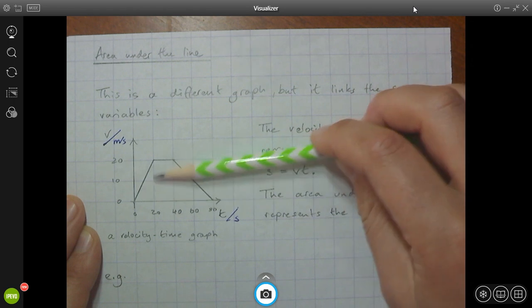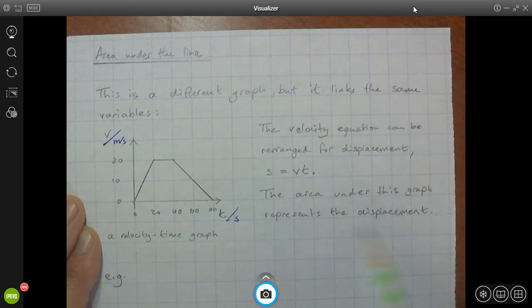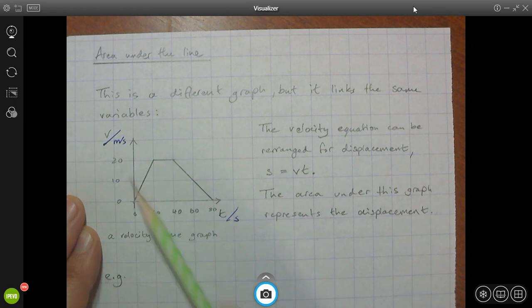And velocity times time equals displacement. So the area under this line is the displacement. It's the displacement of this object. If we look at the units and just consider those for a second, meters per second times by seconds, well, the seconds will cancel each other out because we'll have seconds divided by seconds. We'll just have meters left over, which is the unit for displacement. So that's perfect. That works out.